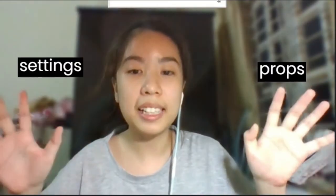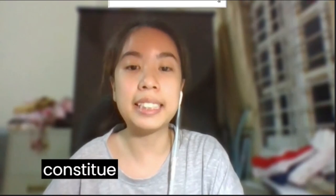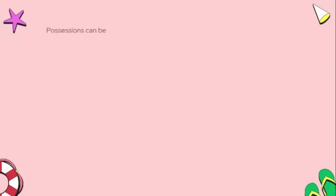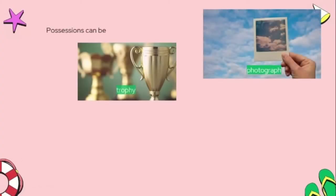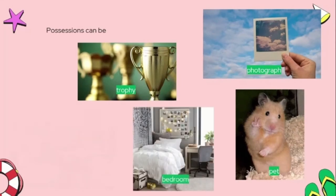Many of the props and settings consumers use to define their social roles become parts of themselves. Those external objects we consider a part of us constitute the extended self. Just about everyone can name a valued possession that has a lot of meaning wrapped up in it. We can usually construct a pretty accurate biography of someone when we simply catalog the items they display in their bedroom or office.